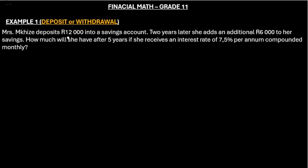Here Mrs. Mckize deposits R12,000 into her account. Then two years later, let's take note of this, two years later she adds another R6,000. That is now here we have more than one deposit made in a row.